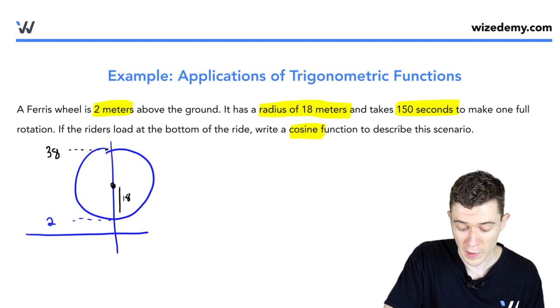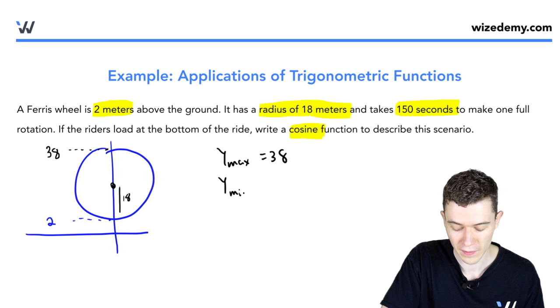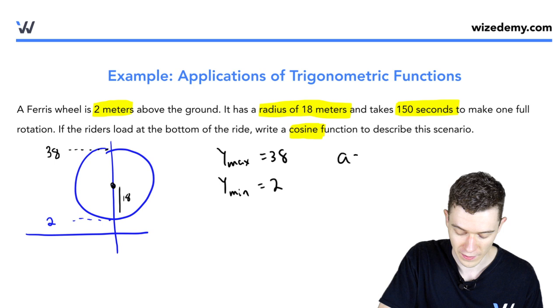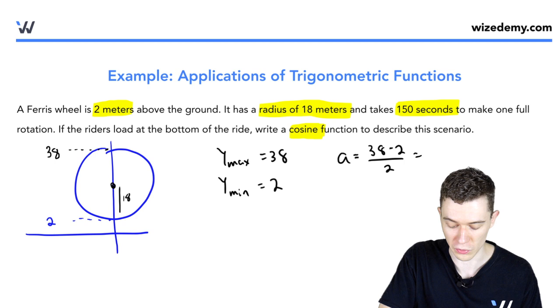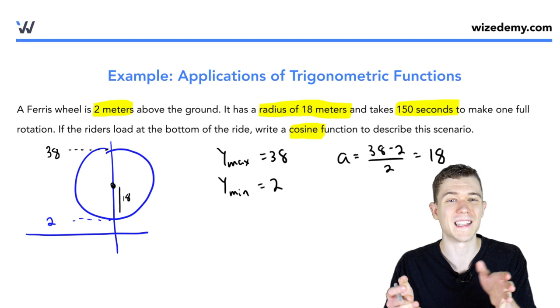We've come up with our y min, which is 2. We can use this to find some information. We know a. a is given by y max minus y min over 2. So that's 36 over 2 or 18. It's no coincidence, this is just the radius.